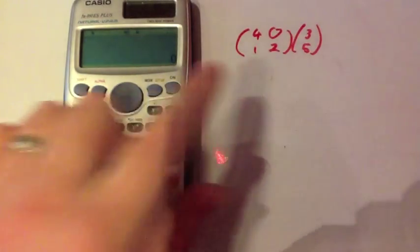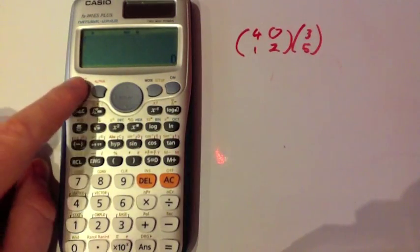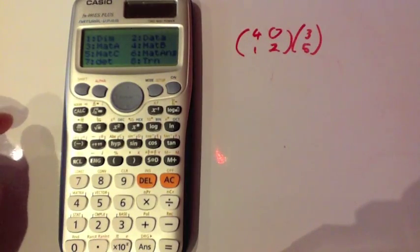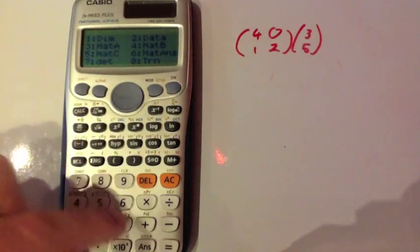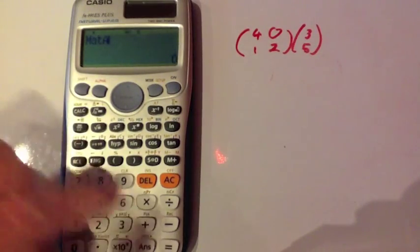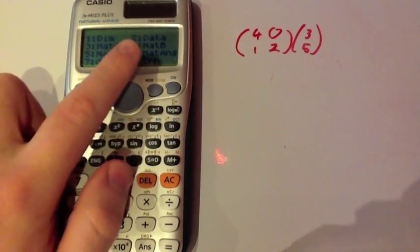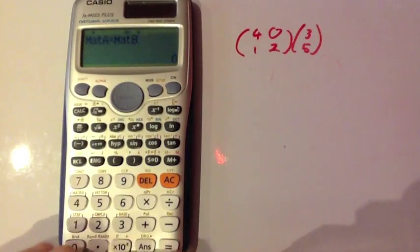Now we're going to multiply these two matrices together. We're going to press shift and then matrix, let's just press shift 4. We're going to put matrix A, so that's number 3. We're just going to times that by, so press times and shift, number 4. Then we can press number 4, which is matrix B. And then press equals.